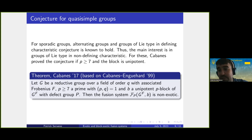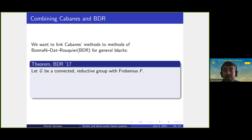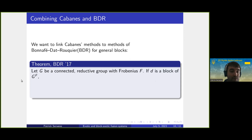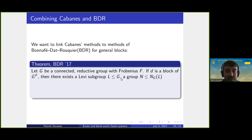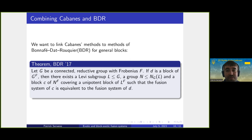We would like to generalize from unipotent blocks to general blocks, which I spent much of my PhD thesis on. There are methods by Bonafé, Dat, and Rouquier that we can try to use. In a simplified version of their theorem: given a connected reductive group G with Frobenius F and an arbitrary block d of G^F, there exists a Levi subgroup L of G, a group N contained in the normalizer of this Levi, and a block c of N^F covering a unipotent block of L^F, such that the fusion system of c is equivalent to the fusion system of d, provided N/L is cyclic.